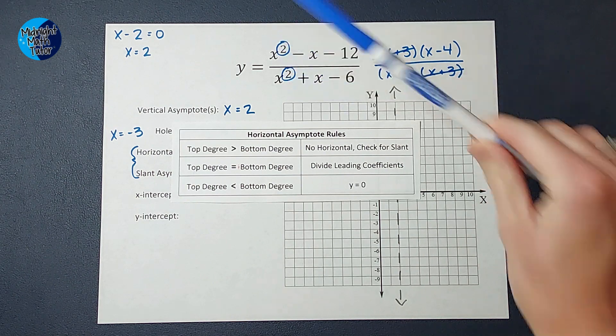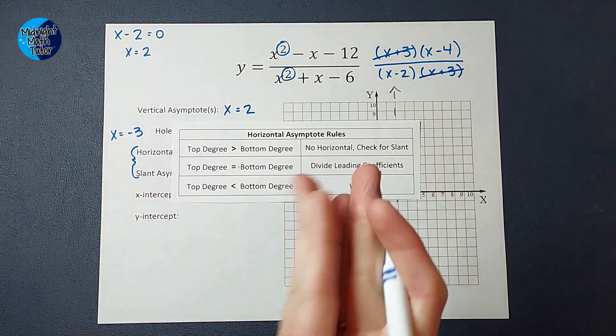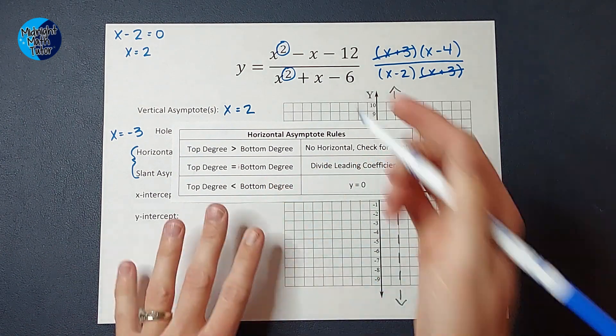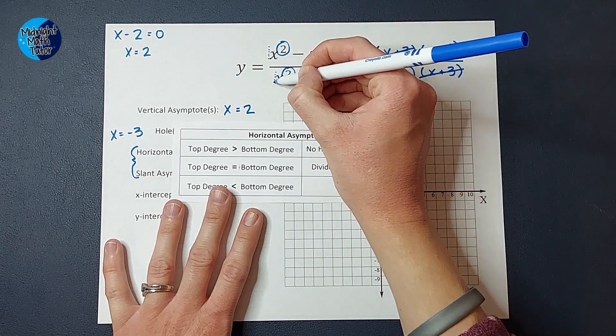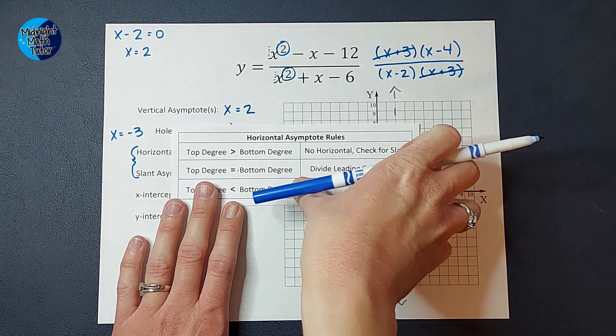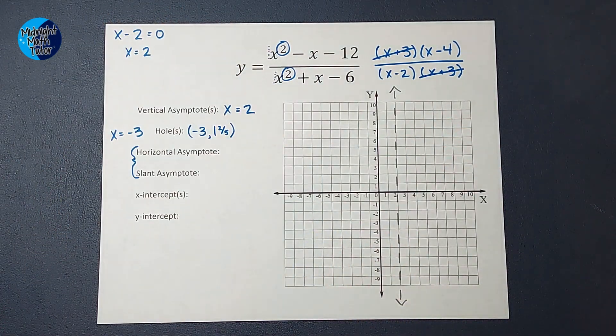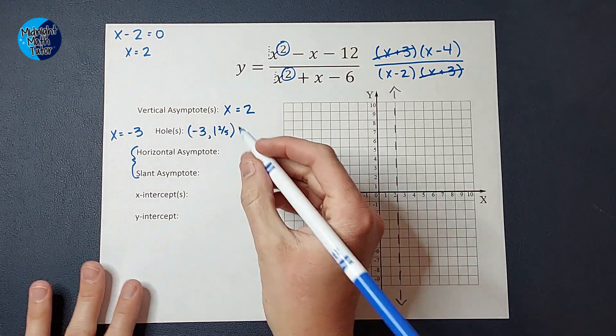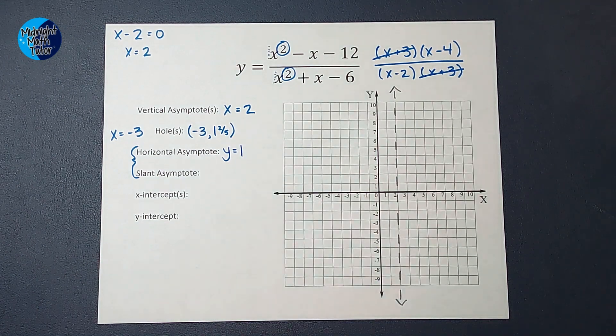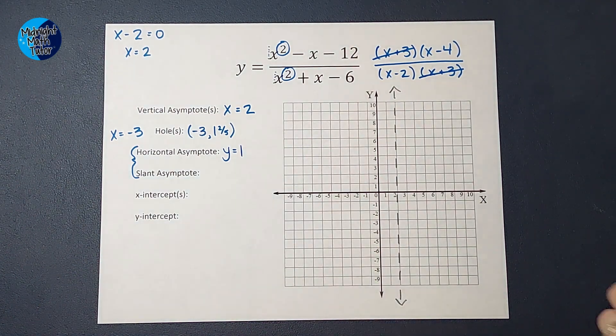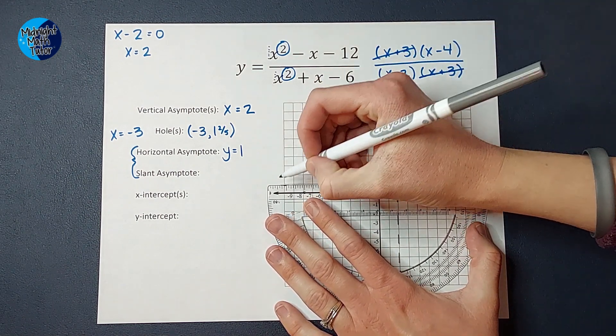All right. Like we said, ours are equal here. So we are going to divide our leading coefficients. Your leading coefficient is the number in front of your variable with the highest exponent. Now here, it doesn't really look like there's one, but there's really a one there, right? One x squared. So if I were to divide my leading coefficients, I would get one over one, which simplifies down to just one, right? So my horizontal asymptote is Y equals one. And again, we are going to represent this on our graph with a dotted line at Y equals one.